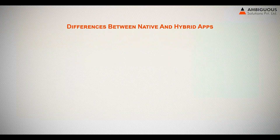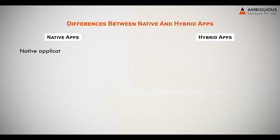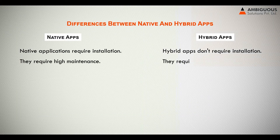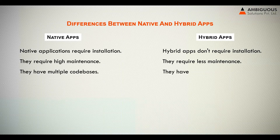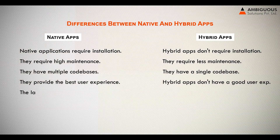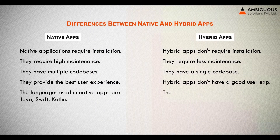Differences between native and hybrid apps: Native applications require installation, hybrid apps don't require installation. Native apps require high maintenance, hybrid apps require less maintenance. Native apps have multiple code bases, hybrid apps have a single code base. Native apps provide the best user experience, hybrid apps don't have as good a user experience. Languages used in native apps are Java, Swift, and Kotlin.